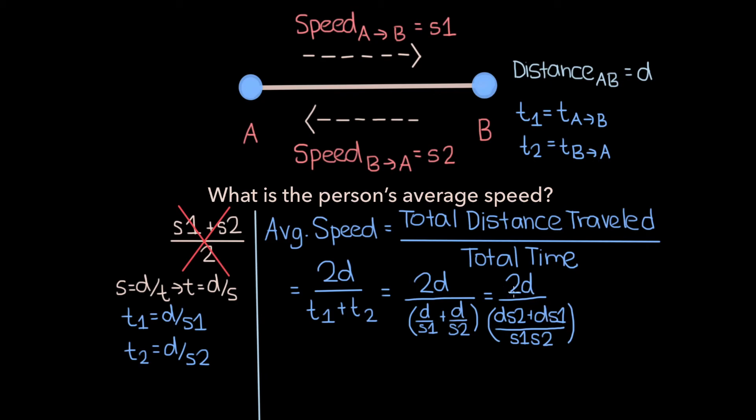Now to further simplify this we need to multiply the top and bottom of our fraction by the reciprocal of what we have on the bottom. I'm going to skip the intermediate step here for the sake of time and ultimately what we end up with is 2D times S1 S2 over DS2 plus DS1. If we cancel out the common factor of D in the numerator and denominator we get 2S1 S2 over S1 plus S2.